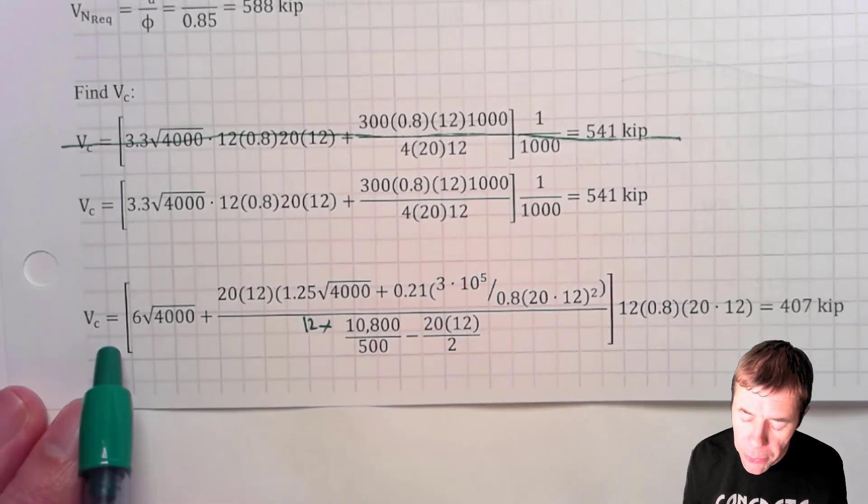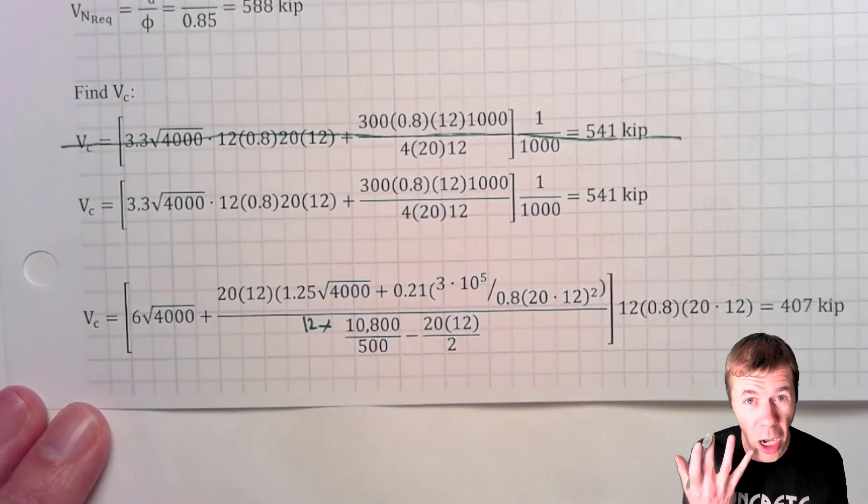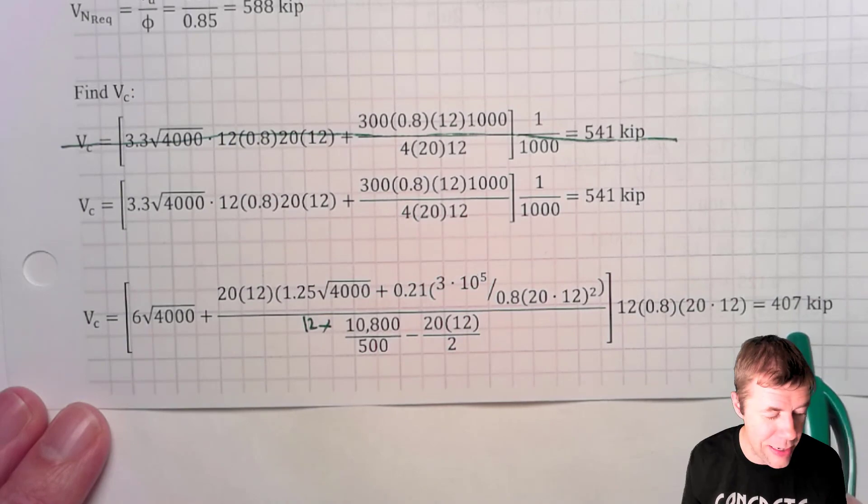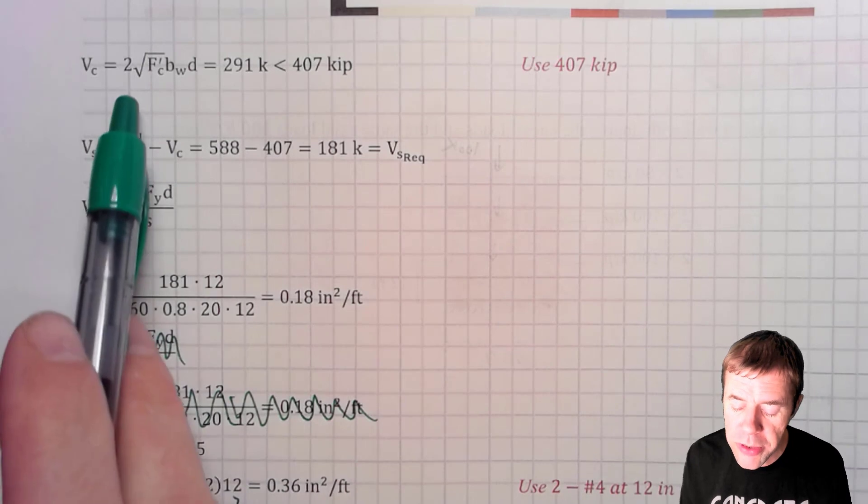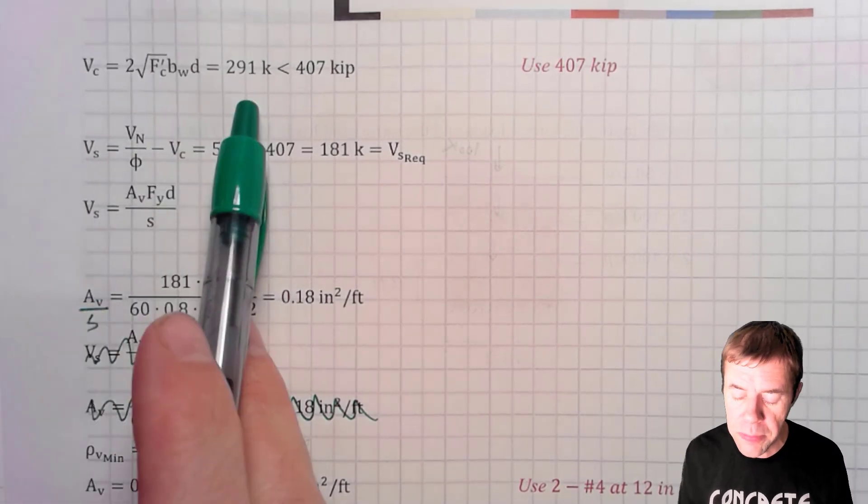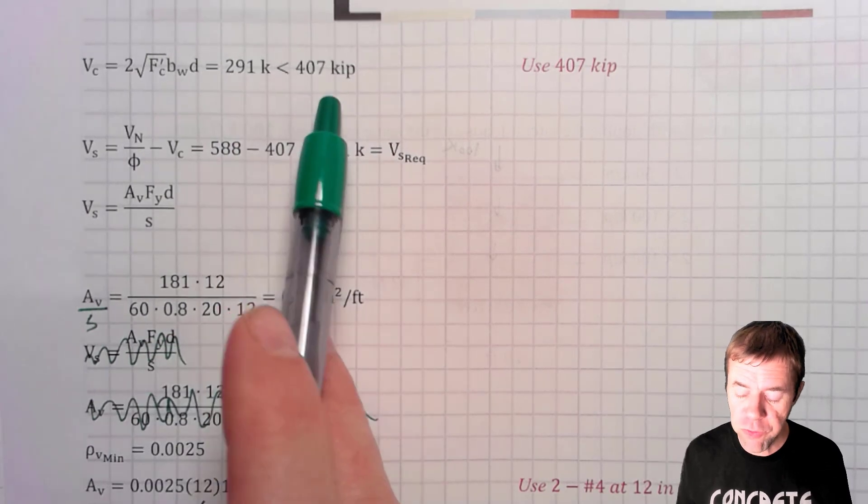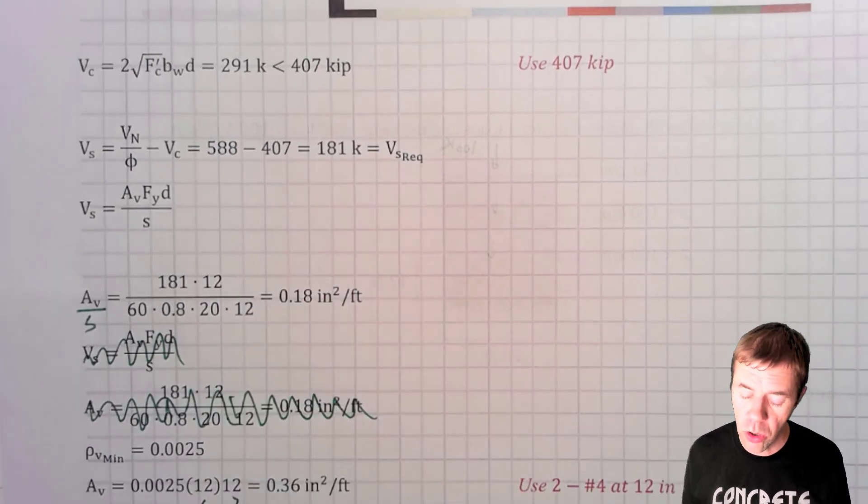This one, I plug in all these nasty numbers. The equations are on the previous video. You can check them out and we get 407 kips out of this one. Now we have to compare those two equations to root f'c bwd, which is 291 kips. That isn't large enough to control. So we end up using 407 kips for our shear capacity of our concrete.